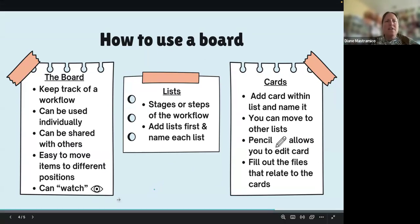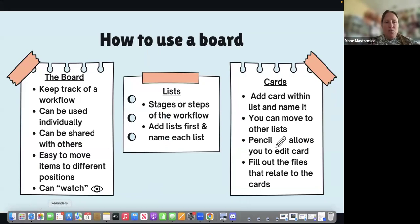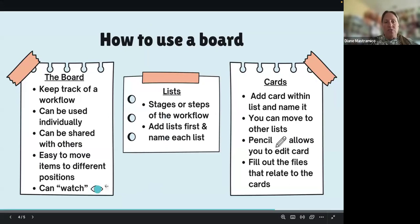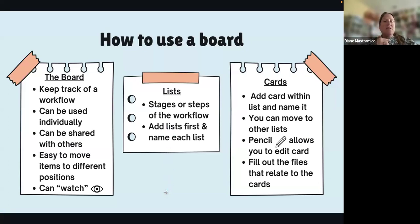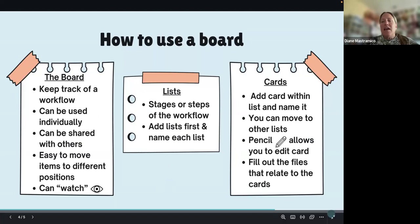The board helps you keep track of your workflow. It can be used individually or shared with others — I have someone sharing one with me, and I'm sharing one with one of my travel agents. It's easy to move items to different positions, and you can watch it via the eye icon. Lists are the horizontal columns representing stages or steps of the workflow. You add lists first, then name each one, and add cards within the lists.